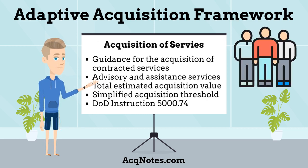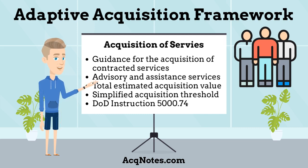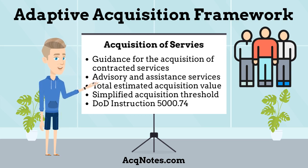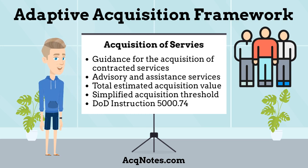The sixth Adaptive Acquisition Pathway is the Acquisition of Services. The Acquisition of Services provides guidance for the acquisition of contracted services from the private sector, to include acquisition of all advisory and assistance services in support of research and development or construction activities. These services have a total estimated acquisition value at or above the simplified acquisition threshold. The main guidance is DOD Instruction 5000.74, Defense Acquisition of Services.